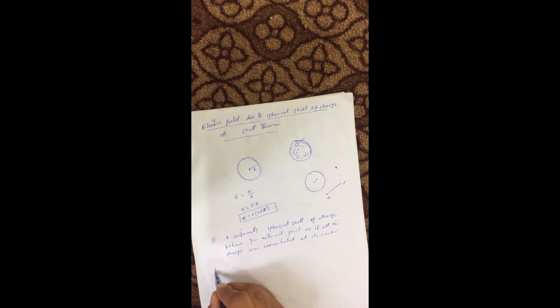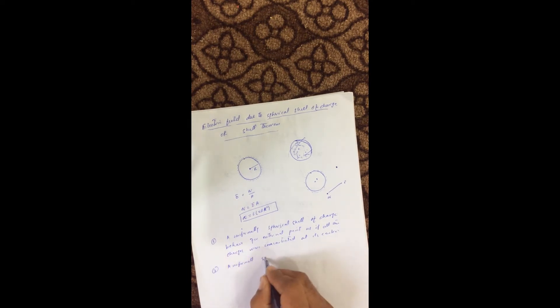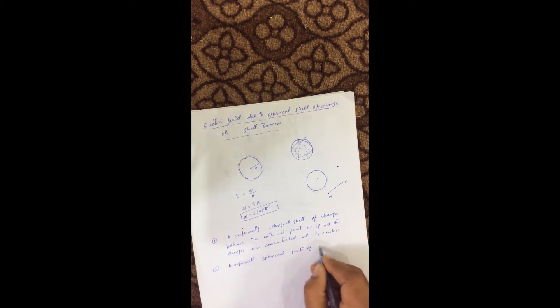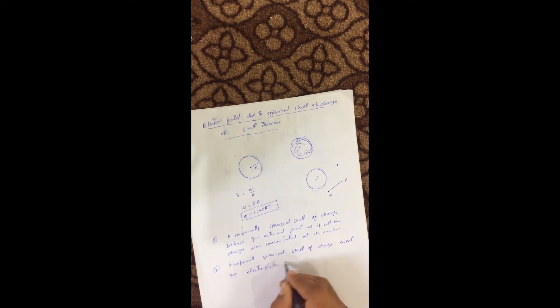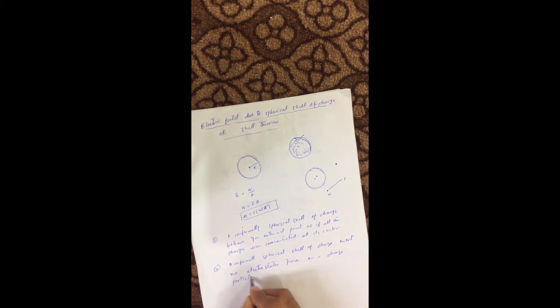The second theorem states: a uniformly charged spherical shell and a charged particle placed inside the shell — meaning if you place a positive test charge somewhere inside the shell, the charges on the surface exert no electrostatic force on that test charge. We will now prove both theorems using mathematical calculation.